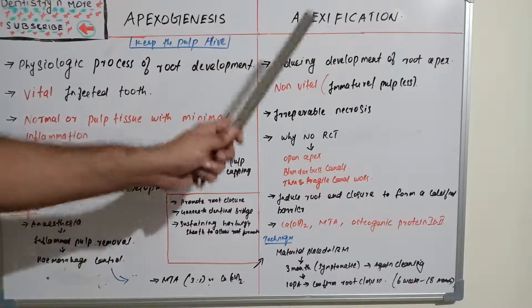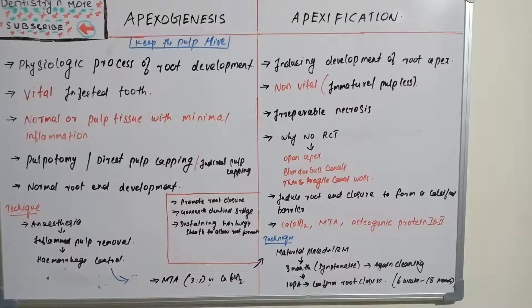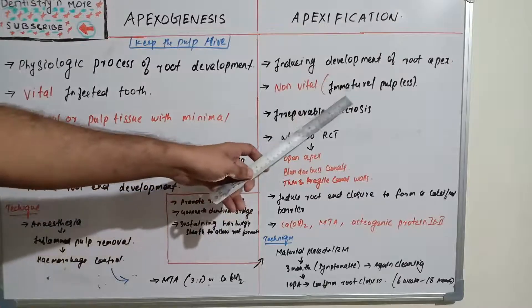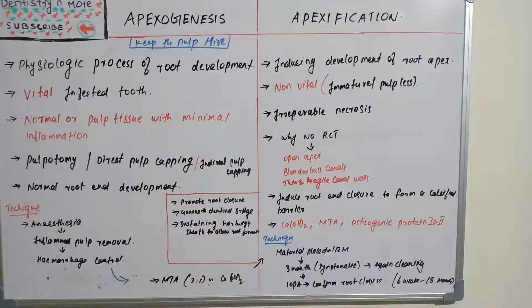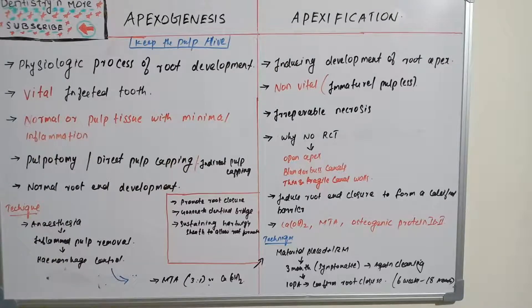Now moving on to apexification — the difference is that here we are inducing development of root apex formation or root apex closure. There is no natural or physiological process because the pulp is non-vital; it cannot repair itself or allow physiological root formation. The pulp is either immature or the tooth is pulpless, and irreparable necrosis has occurred.